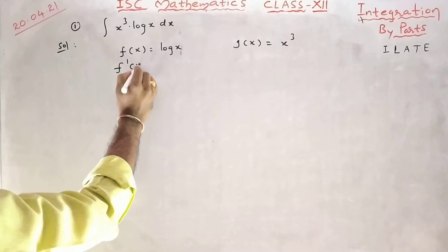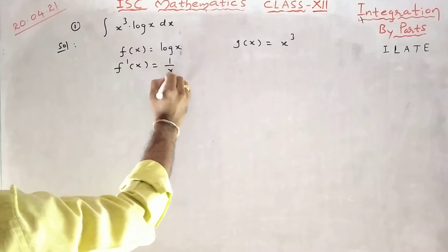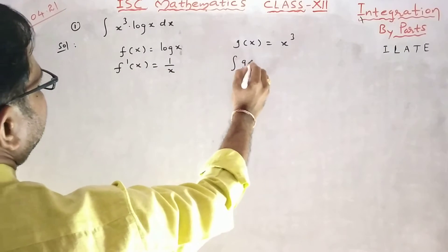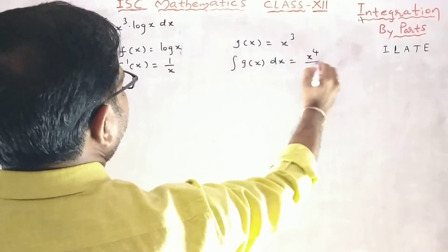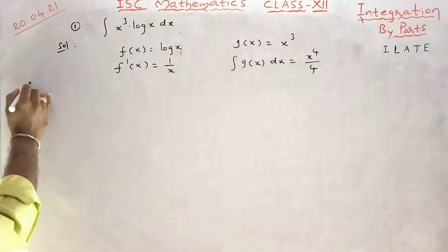So f dash x equal to log x derivative is 1 by x, integral g of x dx equal to x power 4 by 4.